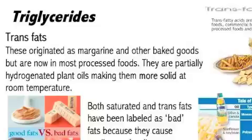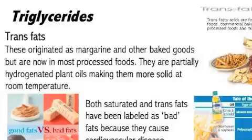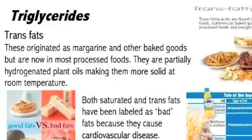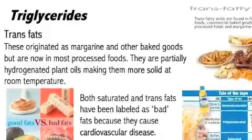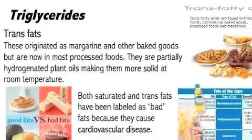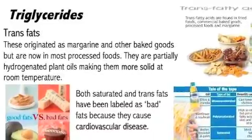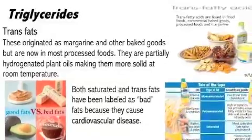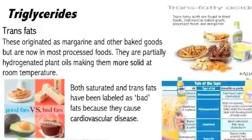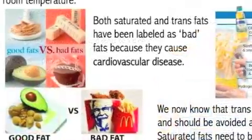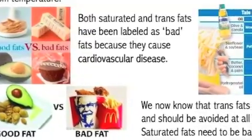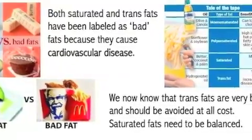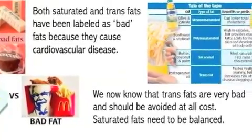Trans fats originated as margarine and other baked goods but are now in most processed foods. They are partially hydrogenated plant oils, making them solid at room temperature. Hydrogenated means we put more hydrogens onto the fatty acids, which removes the double bonds, making the fatty acid chains straighter so they behave more like saturated fats than oils. Both saturated and trans fats have been labeled as bad fats because they can cause cardiovascular disease. We now know that trans fats are the really bad ones and should be avoided at all costs, while saturated fats just need to be more balanced in most of our diets.